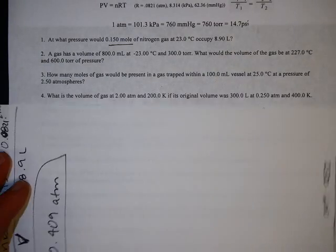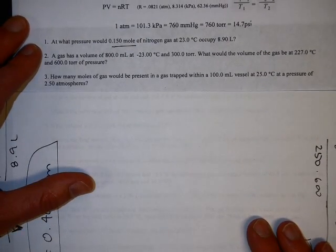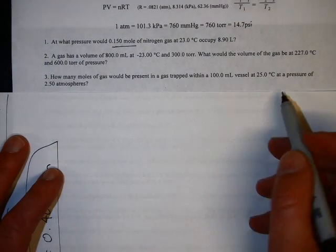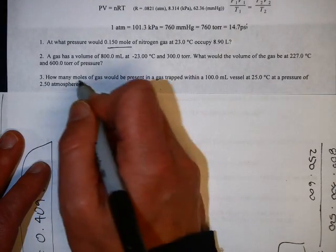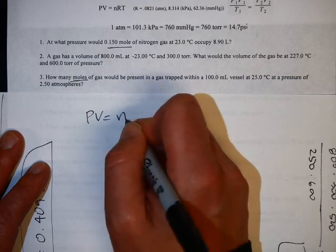Okay, let's try one more. How many moles of gas are present in a gas trapped within a 100 milliliter vessel at 25 degrees Celsius and a pressure of 2.5 atmospheres? Again, it says moles, so you're using the ideal gas law PV equals NRT.